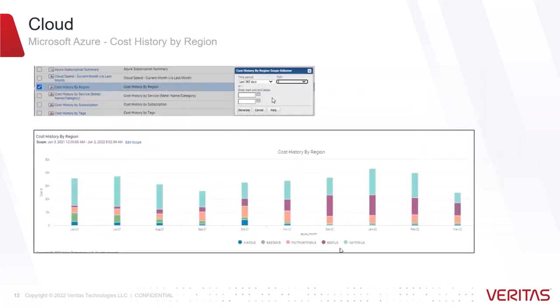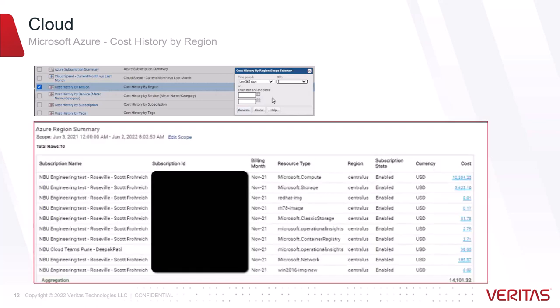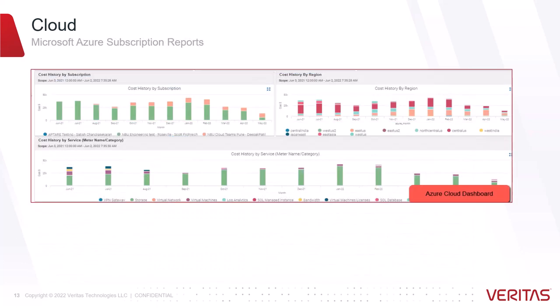Many corporations that use Azure have literally thousands of Microsoft Azure subscriptions. Managing billing for all subscriptions independently imposes a huge amount of effort. Veritas delivers a method to roll up all subscriptions into a single, manageable report. You can run cost history reports by subscription or region, so you can determine which region's Azure subscriptions are costing the most, for example.